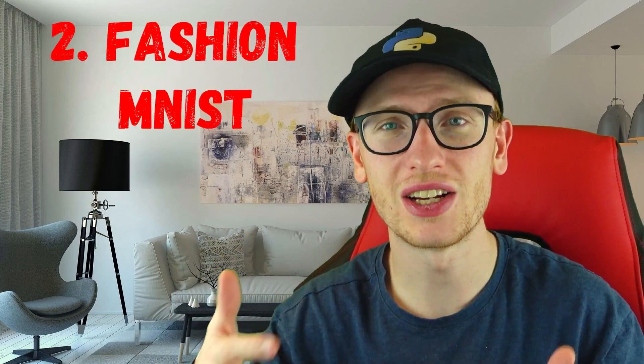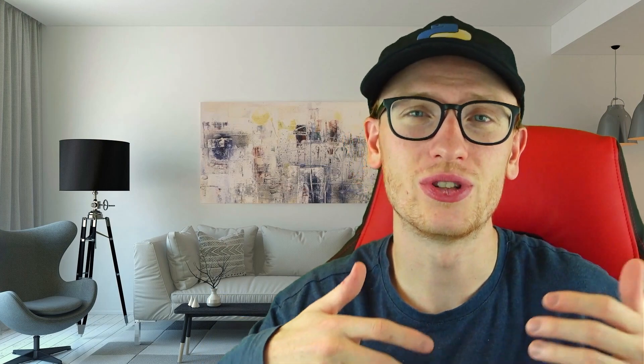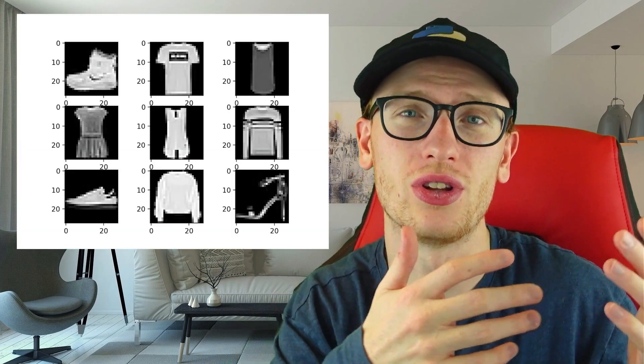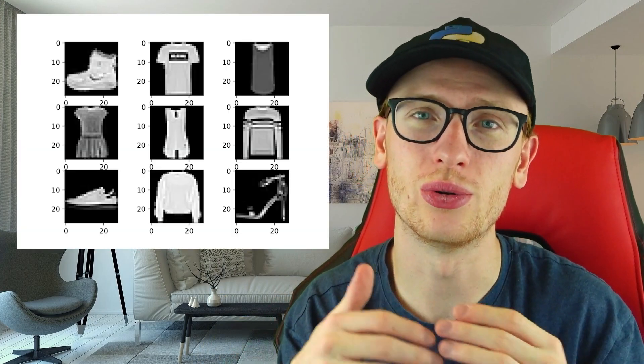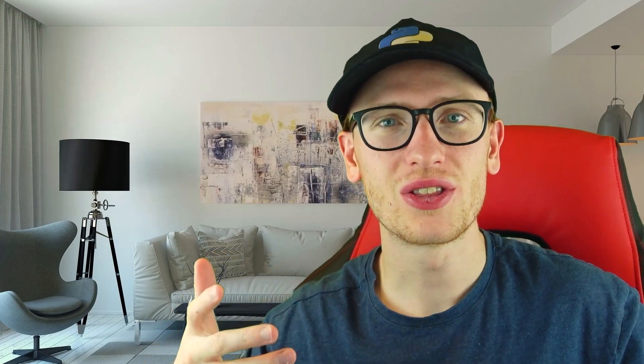A second very popular project for beginners is essentially the upgrade or more modern version of MNIST handwritten digits, where it's the same thing. It's multi-class classification, but now it's fashion. It's called Fashion MNIST, so it's predicting whether the image is a shoe or a coat or a jacket and so on.